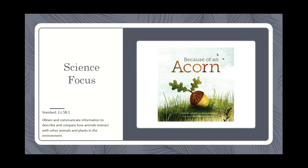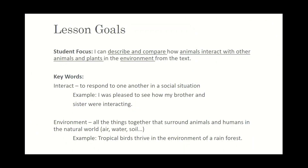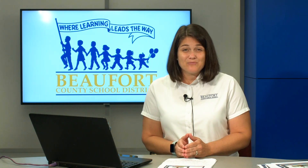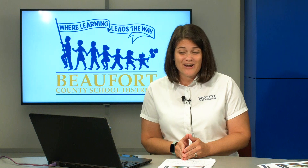For today, we're going to be focusing on a science standard for second grade. That standard is: obtain and communicate information to describe and compare how animals interact with other animals and plants in the environment. Our I can statement for today's lesson is: I can describe and compare how animals interact with other animals and plants in the environment from the text. There are some key words within this I can statement that I really want to focus on, which are interact and environment.